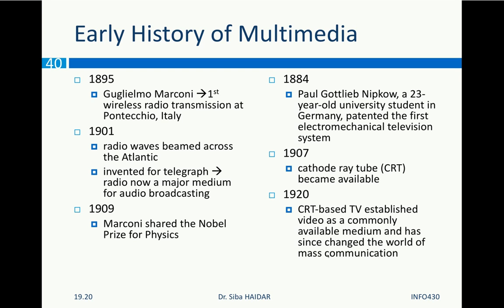In 1895, Marconi had his first wireless radio transmission at Pontechio, Italy. Think about every invention — it was a war invention. Everything, including the World Wide Web, was invented out of a need during wars and then became common use. In 1901 radio waves were beamed across the Atlantic; it was invented first for telegraph. The radio is now a major medium for audio broadcasting. In 1909 Marconi shared the Nobel Prize for Physics.